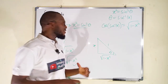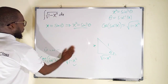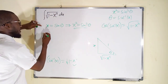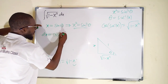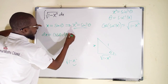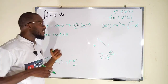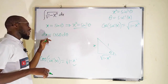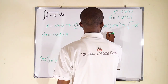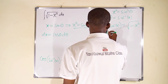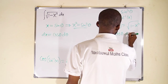Again, we need to take the derivative of x with respect to theta. dx is equal to cos theta d theta. We need this one as well because we want to write everything in terms of theta. So instead of dx, we can now write it as cos theta d theta.